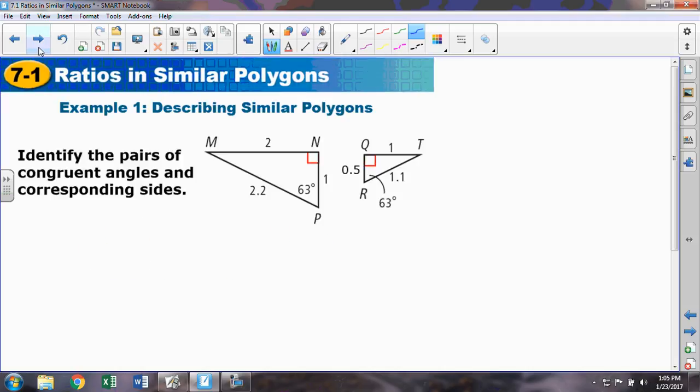And so, we look into these very similar to what we did with congruency. Essentially, what are the three pairs of corresponding angles, and the three pairs of corresponding sides? Essentially, what are the pieces that match up with each other?